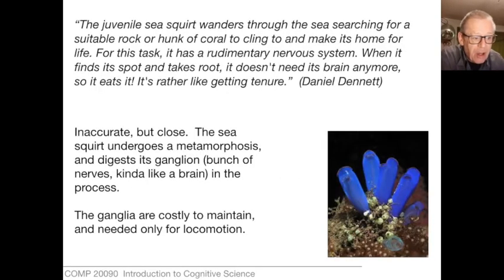Let's consider one rather odd organism: the sea squirt. The philosopher Daniel Dennett has described its life cycle somewhat inaccurately like this: the juvenile sea squirt wanders through the sea searching for a suitable rock or hunk of coral to cling to and make its home for life. For this task it has a rudimentary nervous system. When it finds its spot and takes root, it doesn't need its brain anymore, so it eats it. It's rather like getting tenure, he says.